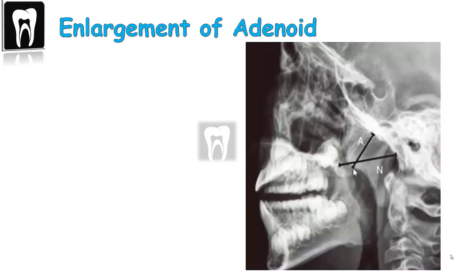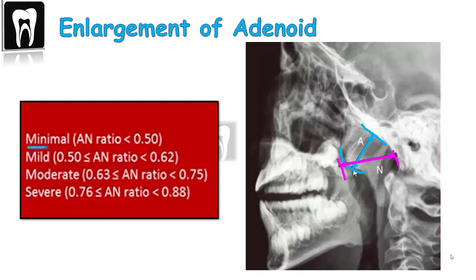The hypertrophy of the adenoid can be graded. To assess adenoid enlargement on a lateral neck radiograph, you can use the adenoid measurement method. 'A' represents the distance from the point of maximal convexity of the adenoid shadow to the anterior margin of the basal occipital. 'N' represents the nasopharyngeal measurement — the distance between the posterior border of the hard palate and the anterior edge of the sphenooccipital synchondrosis. The A/N ratio indicates the degree of enlargement: under 0.5 is minimal, 0.5–0.6 is mild, 0.63–0.75 is moderate, and 0.76–0.88 is severe enlargement.